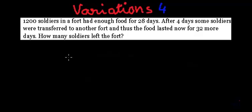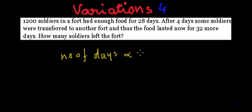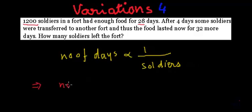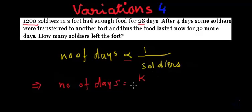We can write that the number of days the food lasts is inversely proportional to the number of soldiers. This means the number of days equals k divided by the number of soldiers, where k is a constant replacing the proportionality sign.